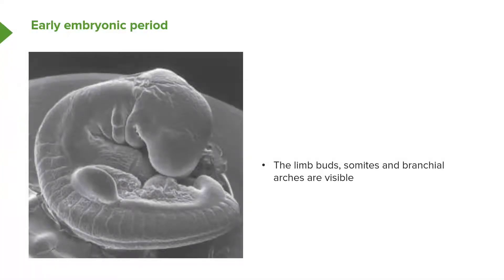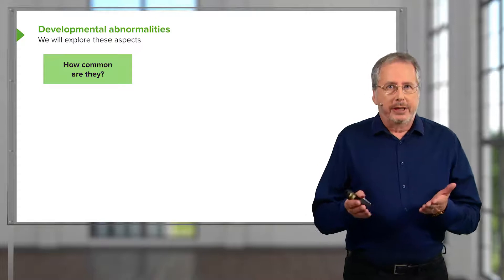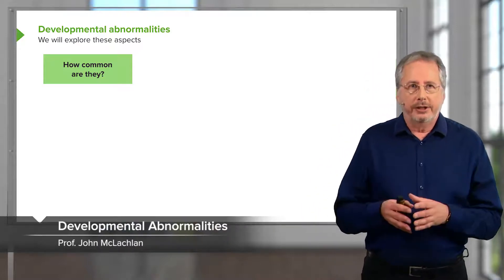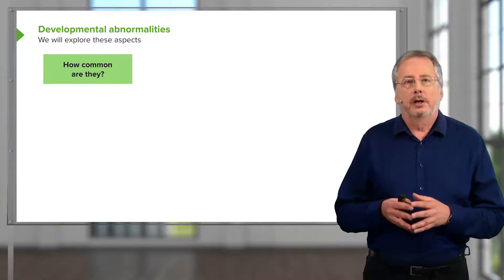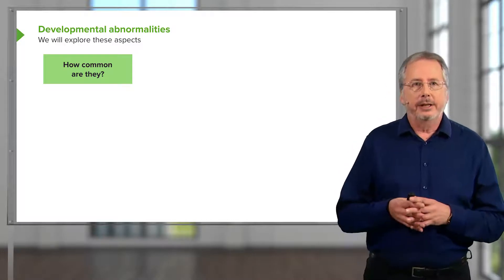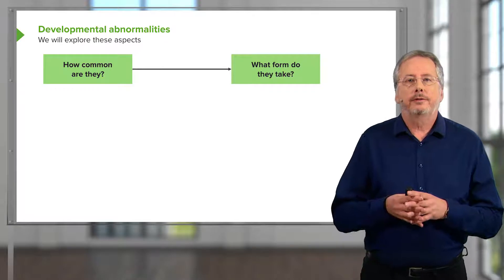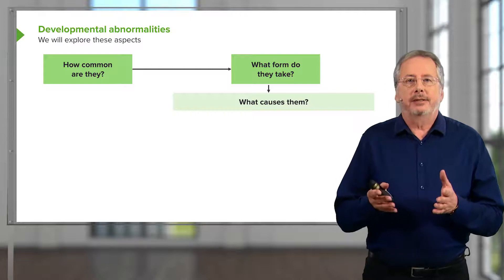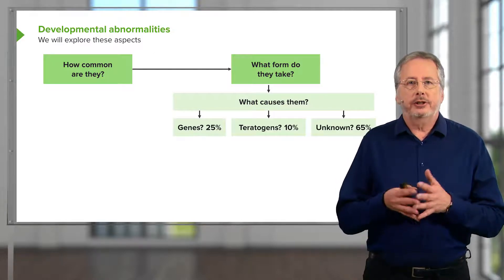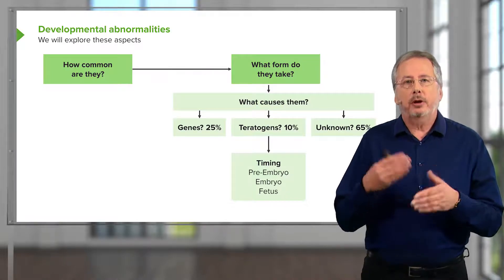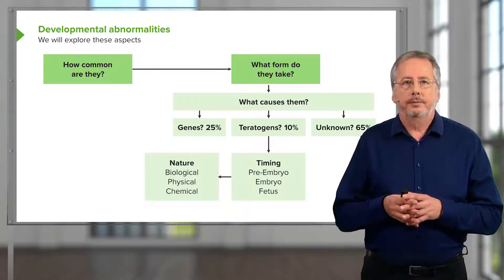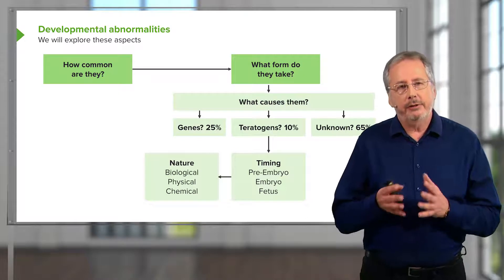Here's an image of an embryo to reinforce this view of the embryonic period with major body structures being formed and laid down. There is still much we do not know about this complex and challenging area of development and medicine. We'll look at how common abnormalities are, the forms that major abnormalities can take, our best guesses as to causes — which fall into three categories: genes, substances or teratogens, and unknown factors — the timing for teratogens, and how people might feel about this. It's a very sensitive and important area that often worries expectant parents greatly.